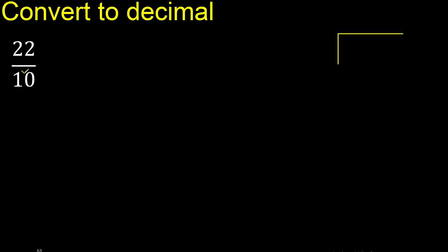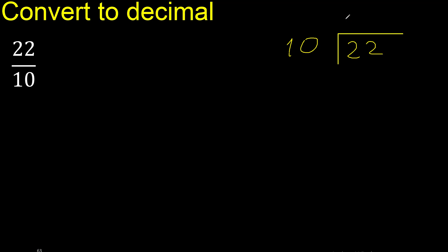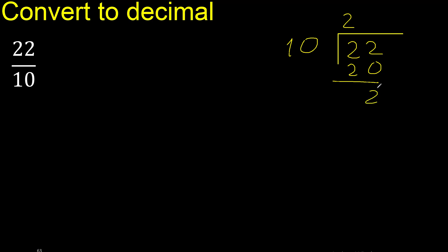22 divided by 10. 22 is not less than 10, therefore 10 multiply by which number is nearest to 22 but not greater? Multiply by 3 is 30, therefore multiply by 2 is 20. Subtract, remainder is 2.